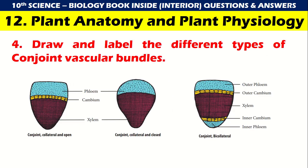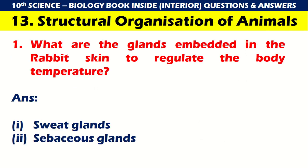Draw and label the different types of conjoint vascular bundles — that is phloem, cambium and xylem. Outer phloem, outer cambium, xylem, inner cambium and inner phloem. So conjoint: collateral and open, collateral and closed, and bicollateral.